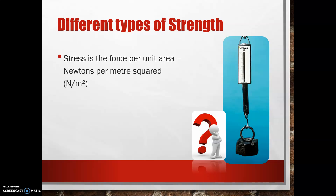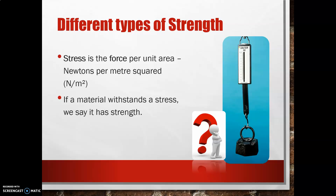When we talk about strength, we're talking about stress. Stress is the force per unit area — newtons per metre squared. For instance, the example I like: if you were giving CPR, you don't just put both hands splayed out across the person's chest. What you do is put one hand over the top of the other, putting all your force down on just the heel of one palm in order to actually give proper CPR. So it's the force per unit area. If a material can withstand a stress, it's strong — it has strength.